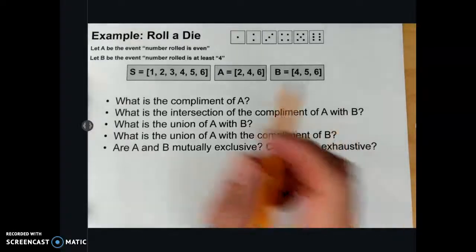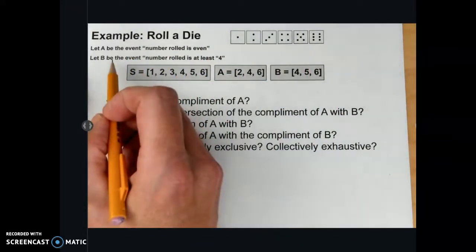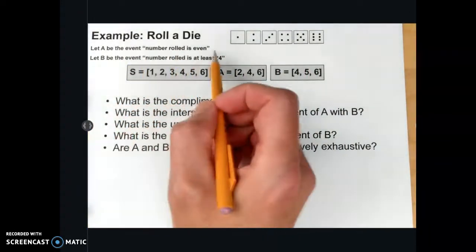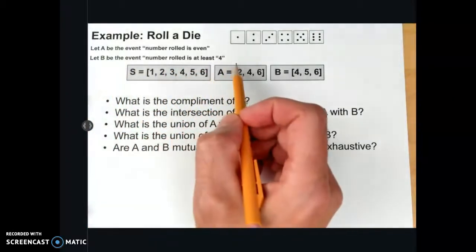Okay, now let's practice this. Imagine the experiment is to roll a die. A will be the number rolled is even. B will be the number rolled is at least 4.